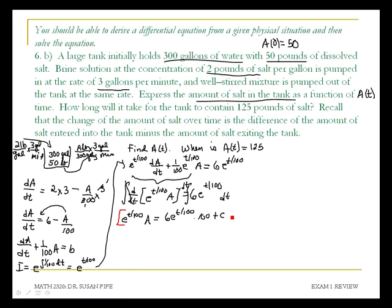From here we want to isolate the A. To isolate A, multiply by e to the negative T over 100. This gives us the general solution, which is A of T equals 600 plus Ce to the negative T over 100. This is our general solution.